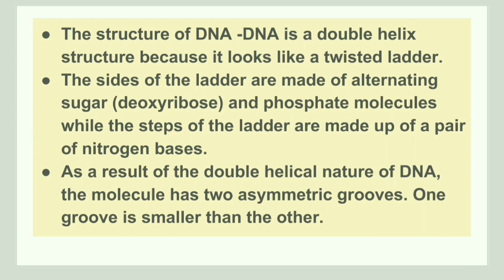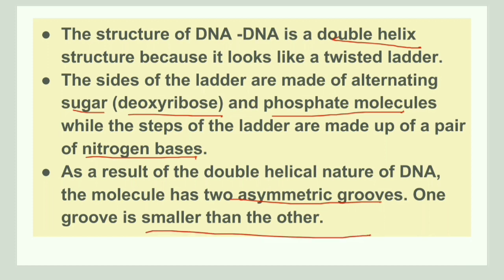The structure of DNA is a double helix that resembles a twisted ladder. The sides of the ladder are made up of deoxyribose sugar and phosphate molecules, while the steps of the ladder are made up of pairs of nitrogenous bases. As a result, two asymmetrical grooves are formed — one smaller than the other.